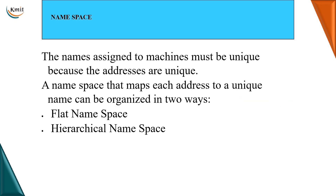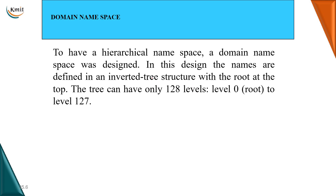Now, coming to the namespace of the Domain Name System - what do we mean by namespace? Namespace means the names assigned to machines must be unique because the addresses are unique. The namespace maps each address to a unique name. The namespace could be a flat namespace or a hierarchical namespace. A flat namespace has no particular structure, whereas a hierarchical namespace has a tree-like structure. The domain namespace we are talking about is a hierarchical namespace where domain names are specified.